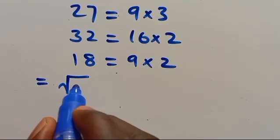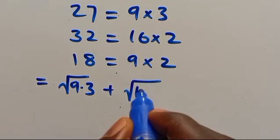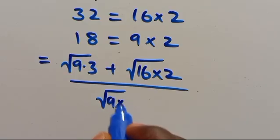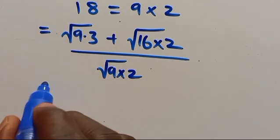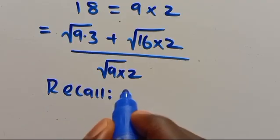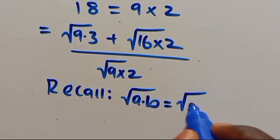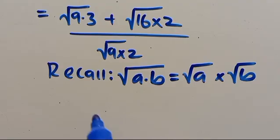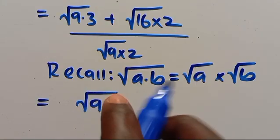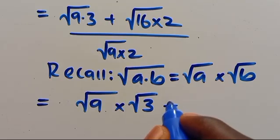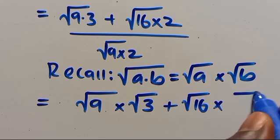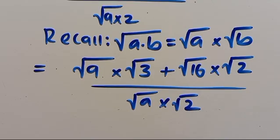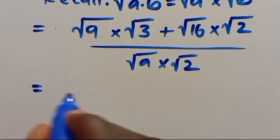Then let's now substitute everything here. We are going to have root of 9 times 3, plus root of 16 times 2, over root of 9 times 2. Let us recall that when we have root of a times b, it equals root of a times root of b. So from here we have root of 9 times root of 3, plus root of 16 times root of 2, over root of 9 times root of 2.